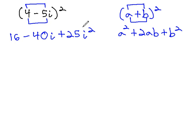However, we remember that i squared is special because i squared is negative 1. So we really have 25 times negative 1, which is negative 25.